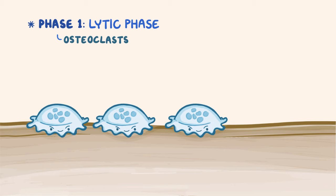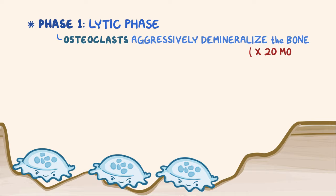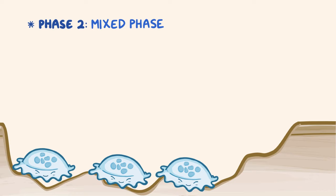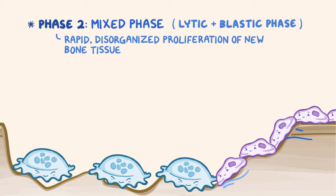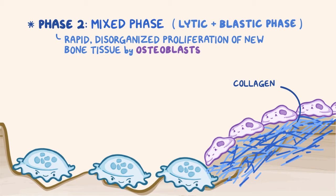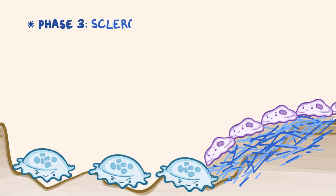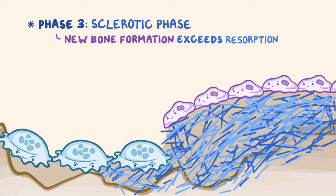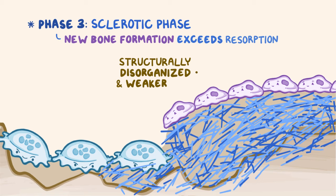There are three main phases to the disease. Phase 1 is the lytic phase, where osteoclasts which have up to 100 nuclei start to aggressively demineralize the bone up to 20 times more than normal. Phase 2 is the mixed phase, where the lytic phase occurs alongside the blastic phase. In the blastic phase, there's a rapid but relatively disorganized proliferation of new bone tissue by an unusually large number of osteoblasts. The result is that collagen fibers are deposited in a haphazard way. Phase 3 is the sclerotic phase, where new bone formation exceeds bone resorption, and the final result is bone that's structurally disorganized and therefore weaker than normal healthy bone.